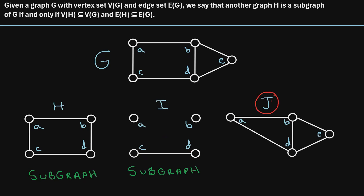Lastly, let's consider graph J. It has four vertices: A, B, D, and E, each of which belongs to the original graph G, so the vertex set of J is a subset of the vertex set of G. However, when we look at the edges of graph J, we notice that an edge exists connecting vertex A to vertex D, and this edge does not exist in the original graph G. So the edge set of J is not a subset of the edge set of G, and therefore graph J is not a subgraph of graph G.